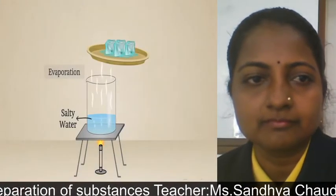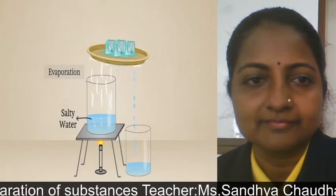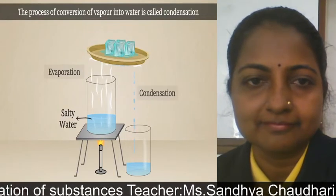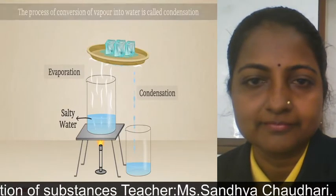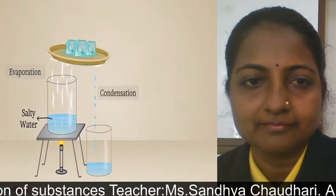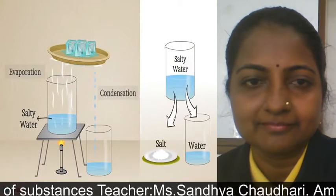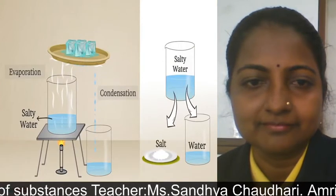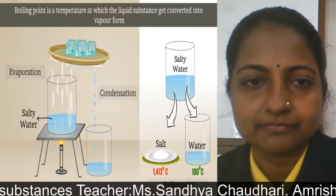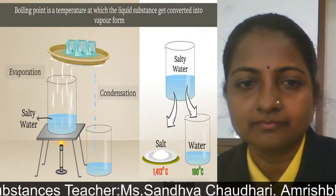The vapours are cooled to form water, which is collected in another beaker. The process of conversion of vapour into water is called condensation. With the help of evaporation and condensation, it is possible to separate components of a solution. For this method to work, different components must have different boiling points. Boiling point is the temperature at which a liquid substance gets converted into vapour form.